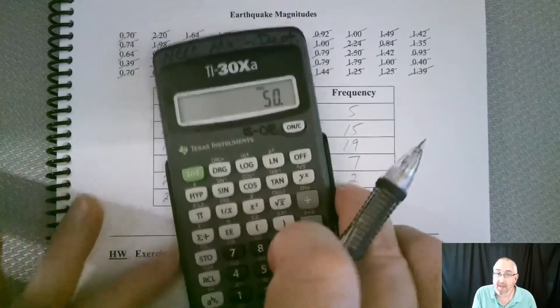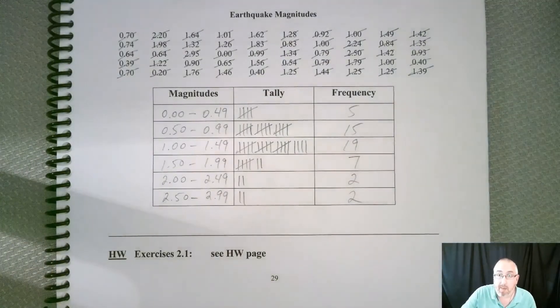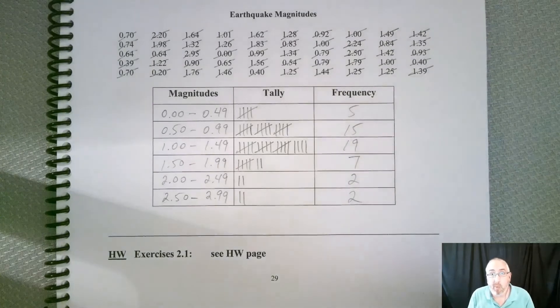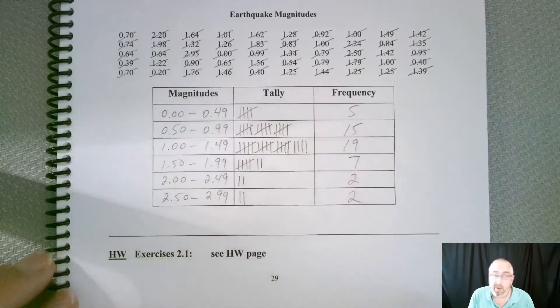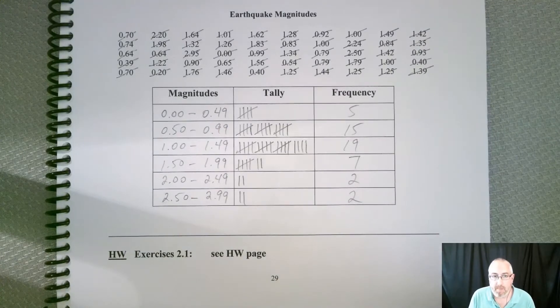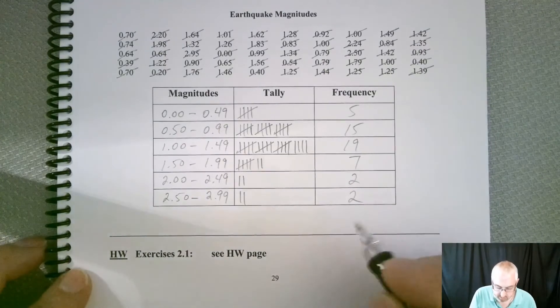So we have 5 plus 15 plus 19 plus 7 plus 2 plus 2 equals 50. So now that doesn't mean that we got them right, but it does mean that we got them all. So you don't want to be missing one or something like that.